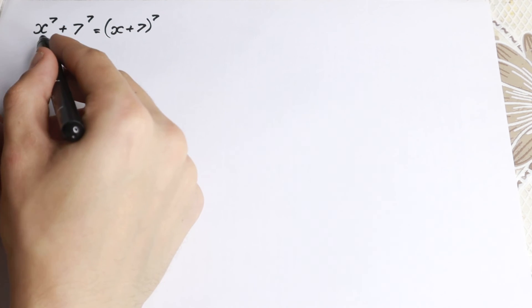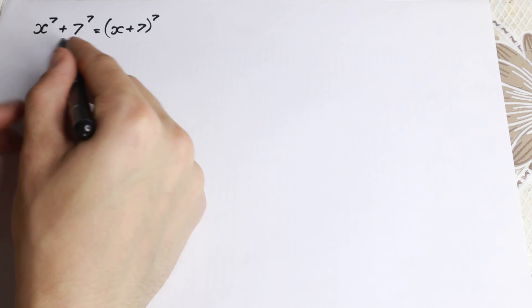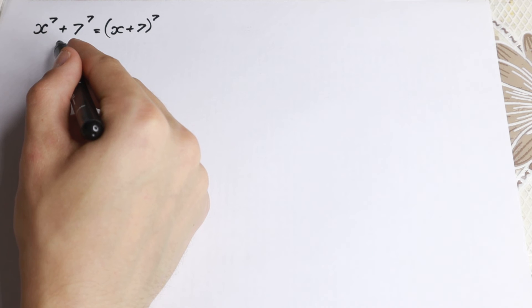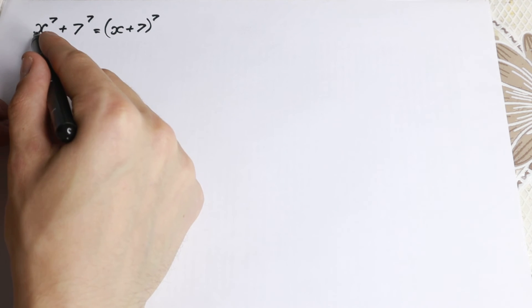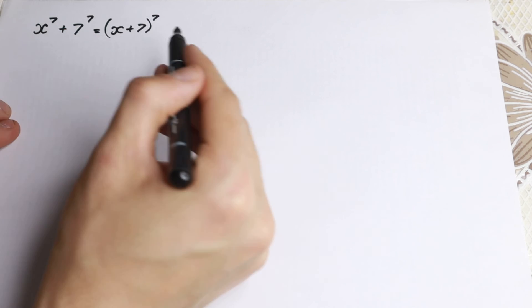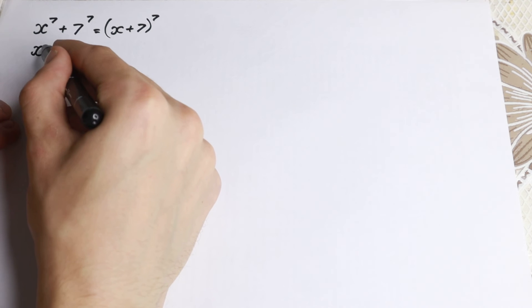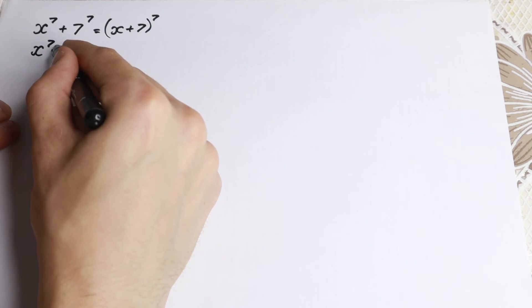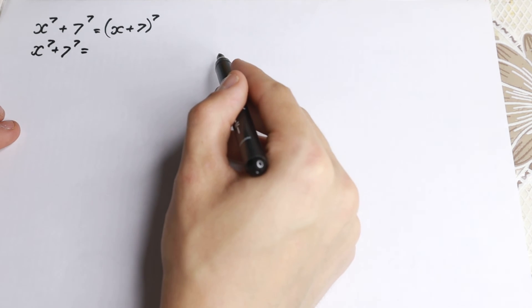First of all, we have a really good expression on the left hand side. We have a sum, we don't have parentheses, so let's leave it with this way. We have x to the 7 plus 7 to the 7th power equal to something on the right hand side.